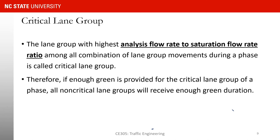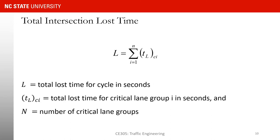If enough green is provided to the critical movement we know the other movement can also go through. Now we are getting ready to find the optimal cycle lengths. But before that, one last thing we need is the total intersection loss time. You need to know the loss time for each critical lane group and the summation of all those loss times gives you the intersection loss time.